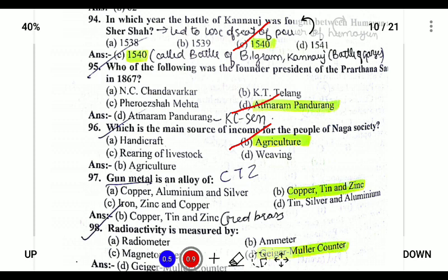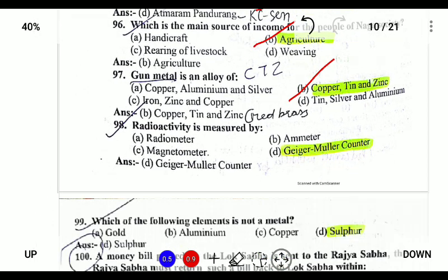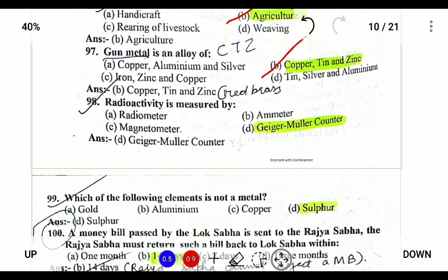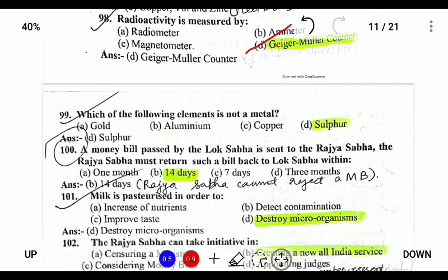Gunmetal is an alloy of copper, tin, and zinc — C, T, Z — and it is also known as red brass. Radioactivity is measured by the Geiger-Müller counter. A magnetometer is used to measure magnetic field, ammeter for current, and radiometer for radio waves. So the Geiger-Müller counter is the appropriate answer.